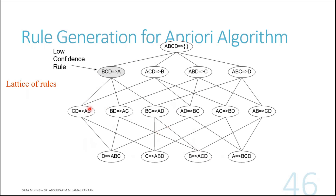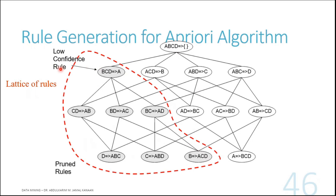Looking at the lattice of rules: if a rule is found to have low confidence, then none of its other derived rules from the same itemset will have higher confidence, and we can prune accordingly.